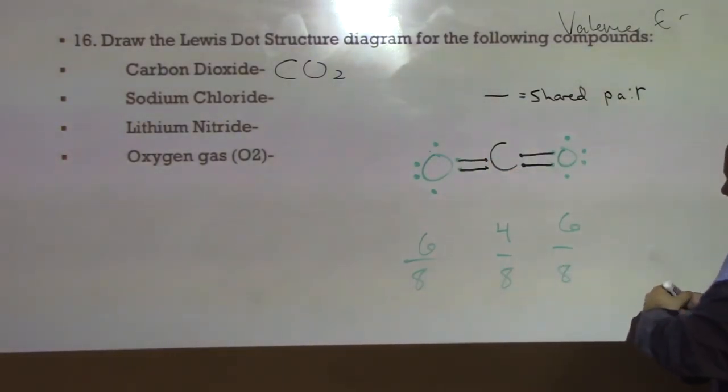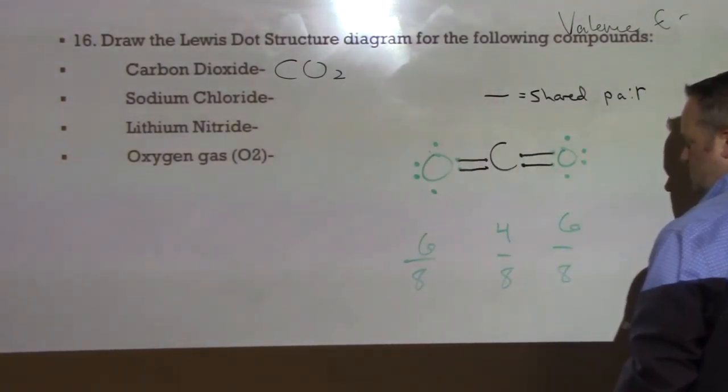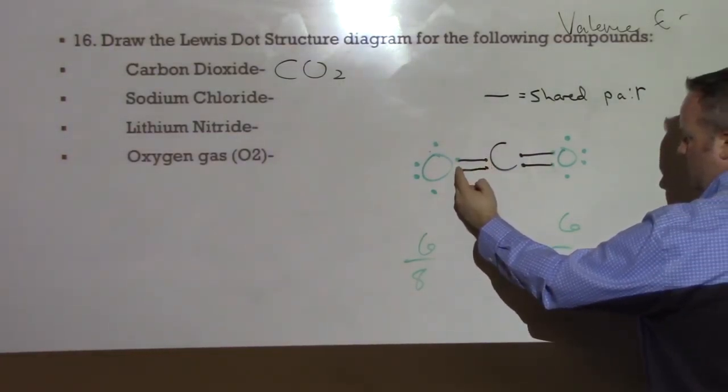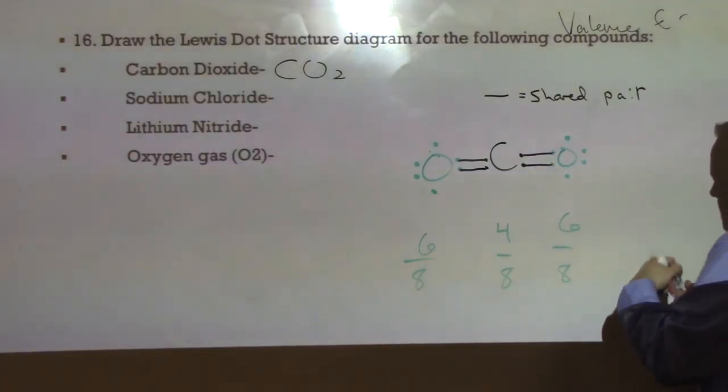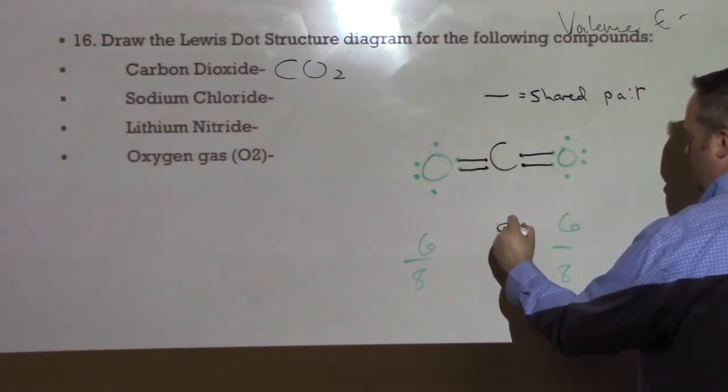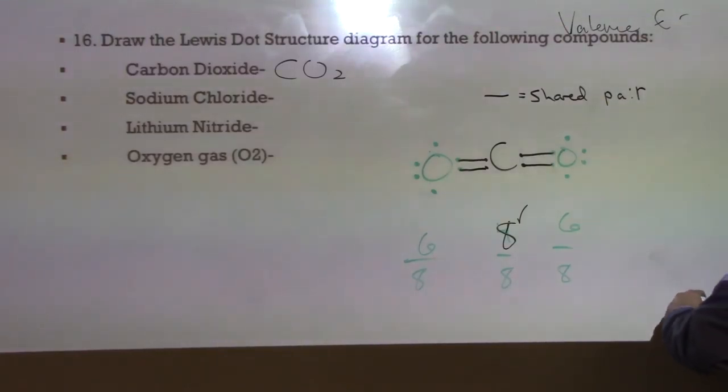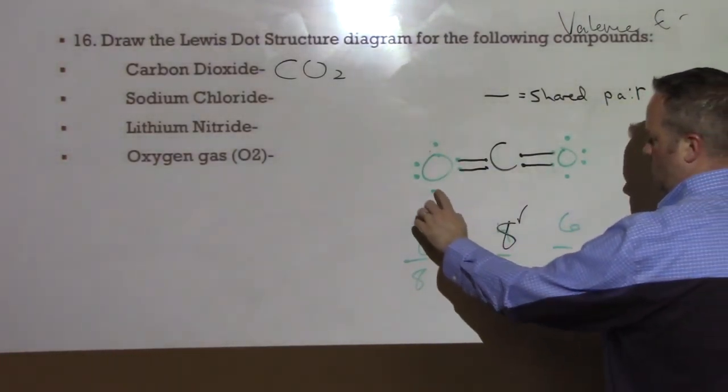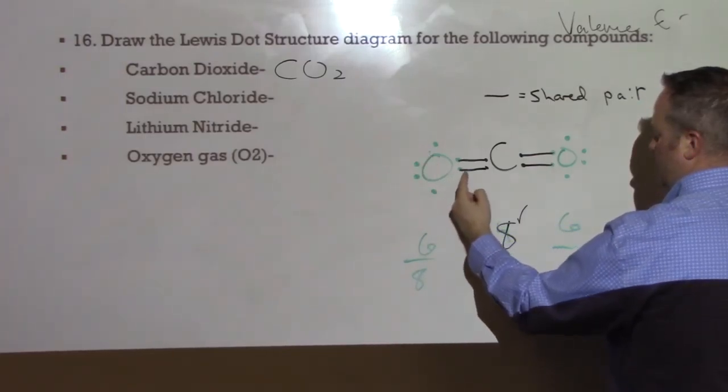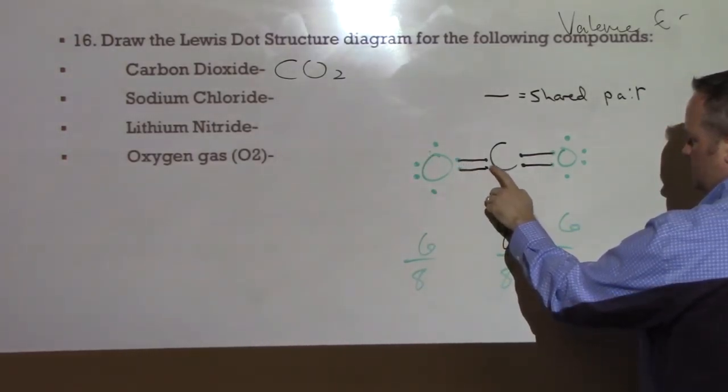So, what's happening here is the lines, each line is a shared pair and what I've done is I've kind of connected the dots here to show you what I'm talking about. So, when I count the valence electrons for carbon, I now have 1, 2, 3, 4, 5, 6, 7, 8. So, carbon has 8 and it's happy.